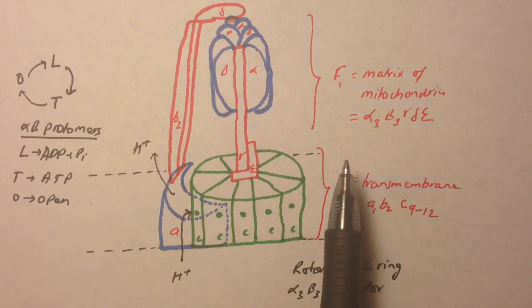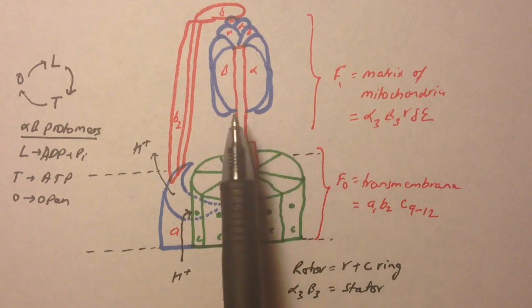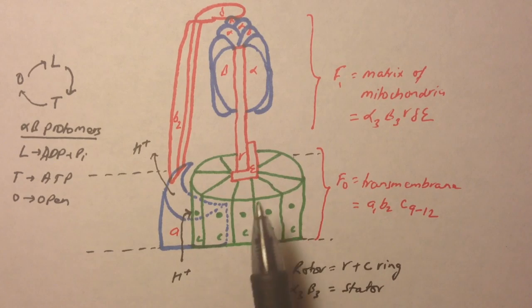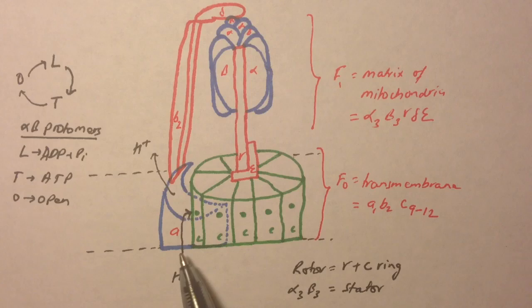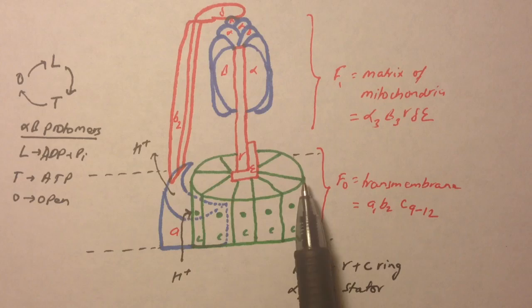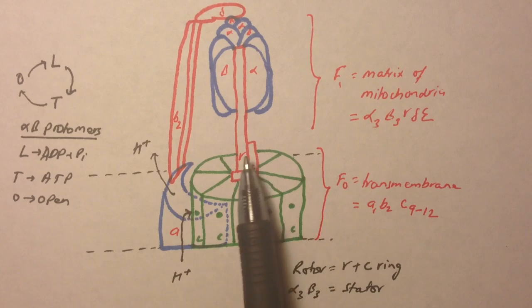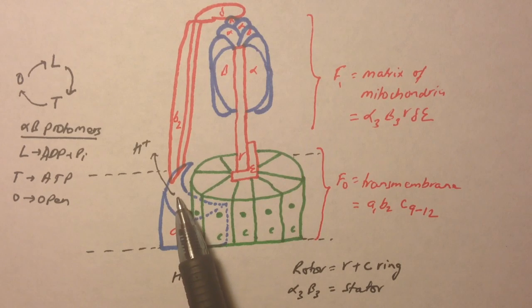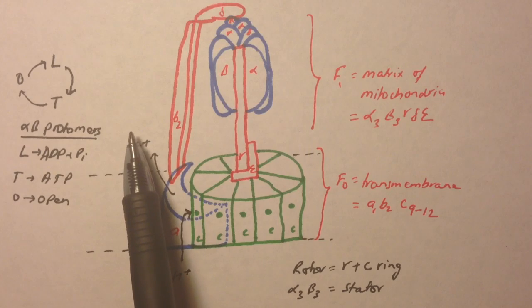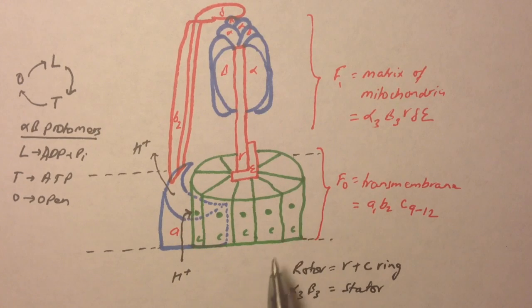Using urea or some other solution, you can separate the F1 and F0. The way this machine works is hydrogen from intermembrane space first enters the a subunit of F0, and from a it binds in this pocket in C. This thing rotates, and let's say a hydrogen bound here makes a complete turn and comes back to a again, and it leaves to the mitochondrial matrix. That's how the hydrogen rotates this C-ring.